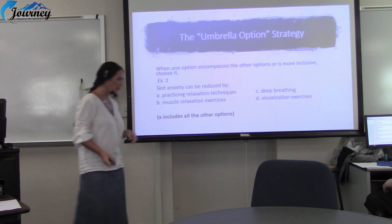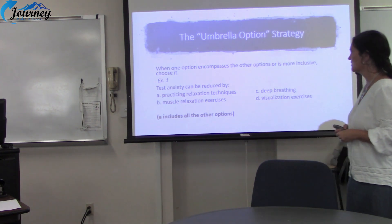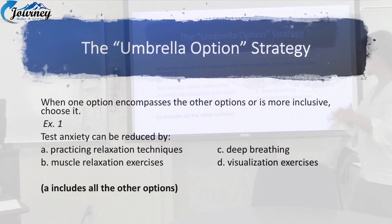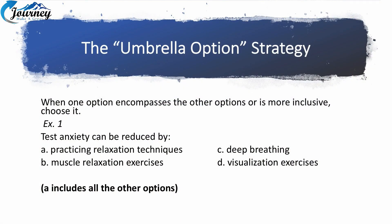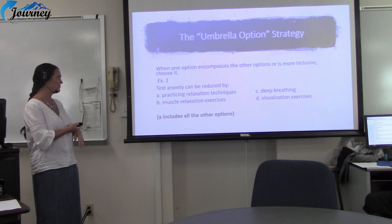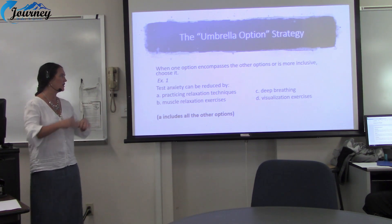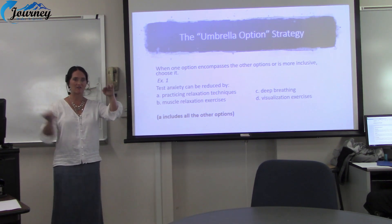Then we have the Umbrella Option — another good one. This is when one option encompasses all the other options within the answer. For example: 'Test anxiety can be reduced by...' — A is correct because it includes all the other choices. That's why we call it an umbrella: it covers them all. If you chose B, that's just one type. We want to choose the umbrella that covers them all.